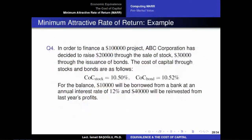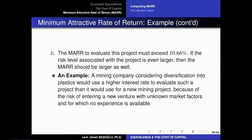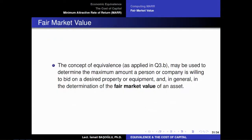Every product has a fair market value, and this fair market value is dependent on the party who would like to purchase that product. Similarly, every investment has a fair market value. We can use the concept of equivalence to determine the maximum amount a person or company is willing to bid on a desired property or equipment. This is called the fair market value of an asset — the maximum amount a person or company is willing to bid on a desired property.